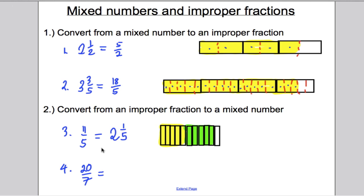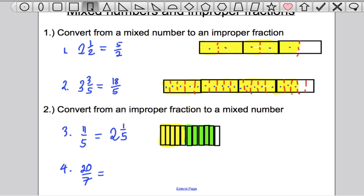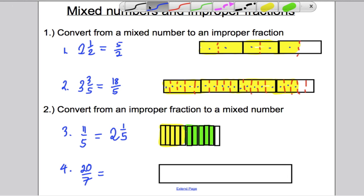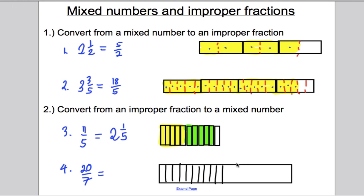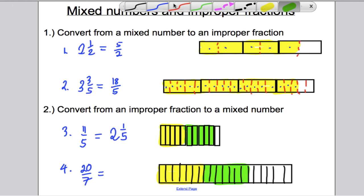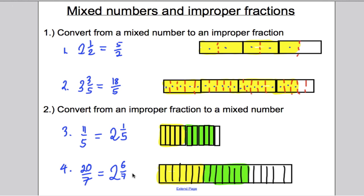We do the same with 20 sevenths. We draw 20 boxes — each one is a seventh. We know 7 of them make 1, so we group the first 7 — that's one whole. The next 7 — another whole. We count what's left: 1, 2, 3, 4, 5, 6 — not enough for another 7. So we've got 2 wholes and 6 sevenths left. That's the answer: 2 and 6 sevenths.